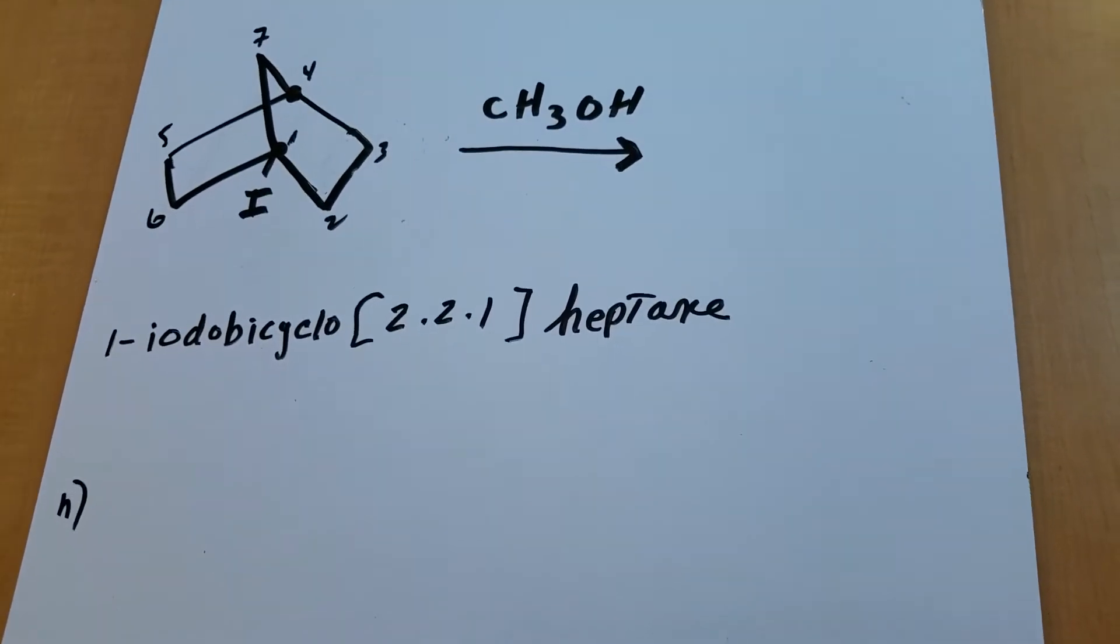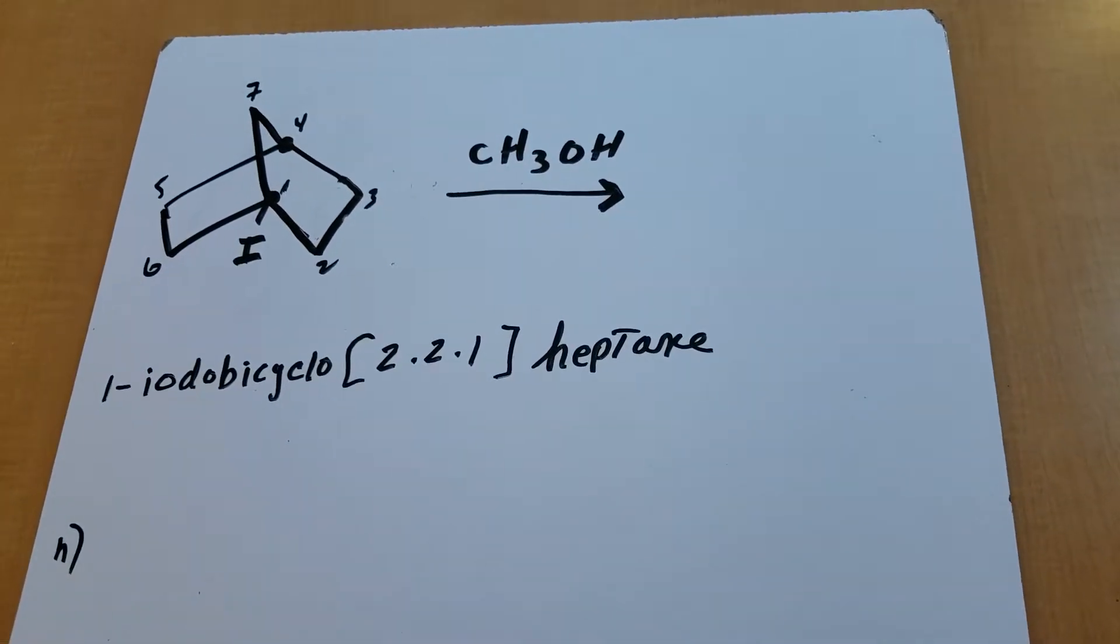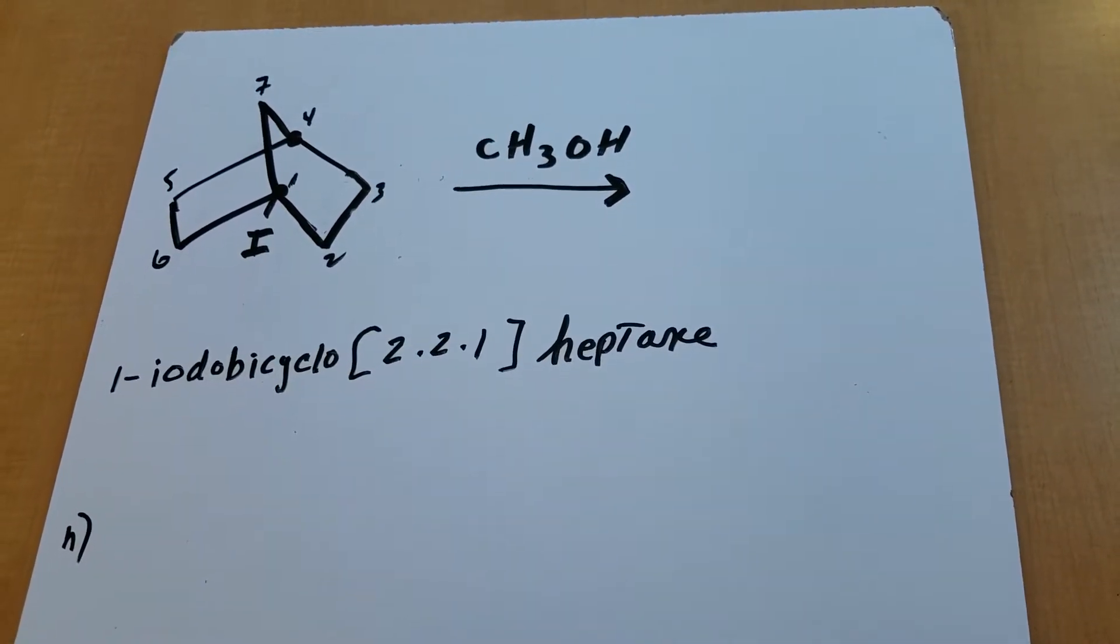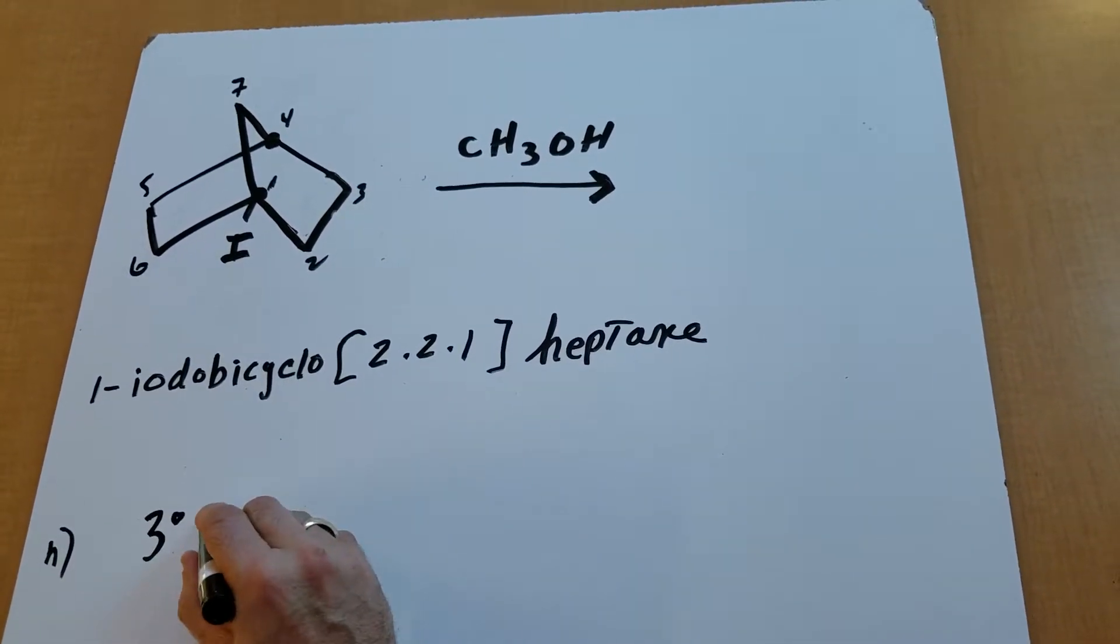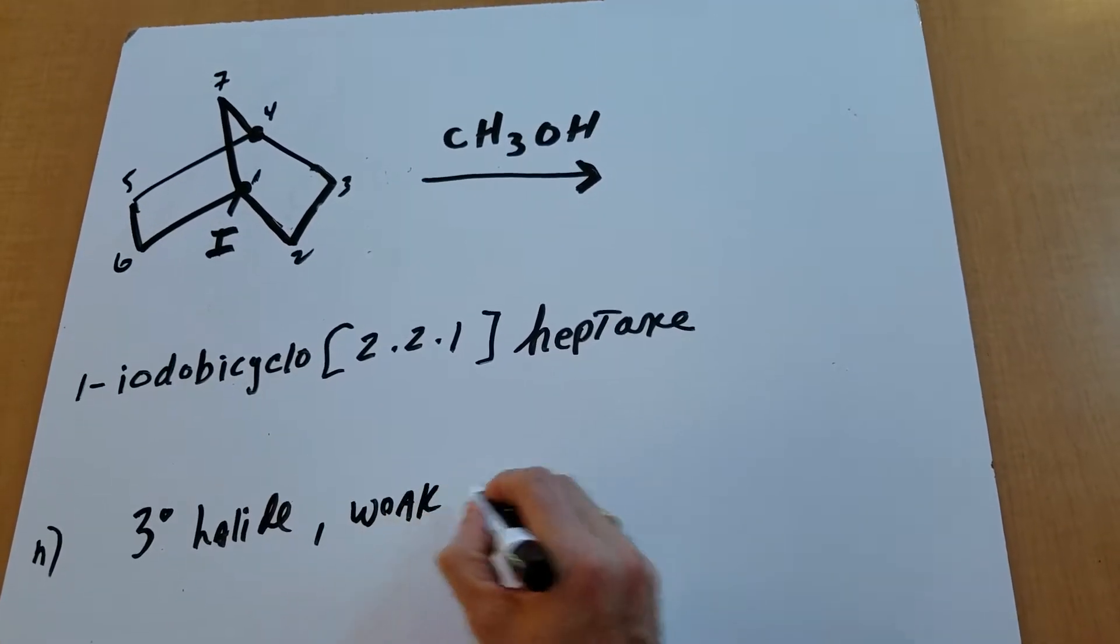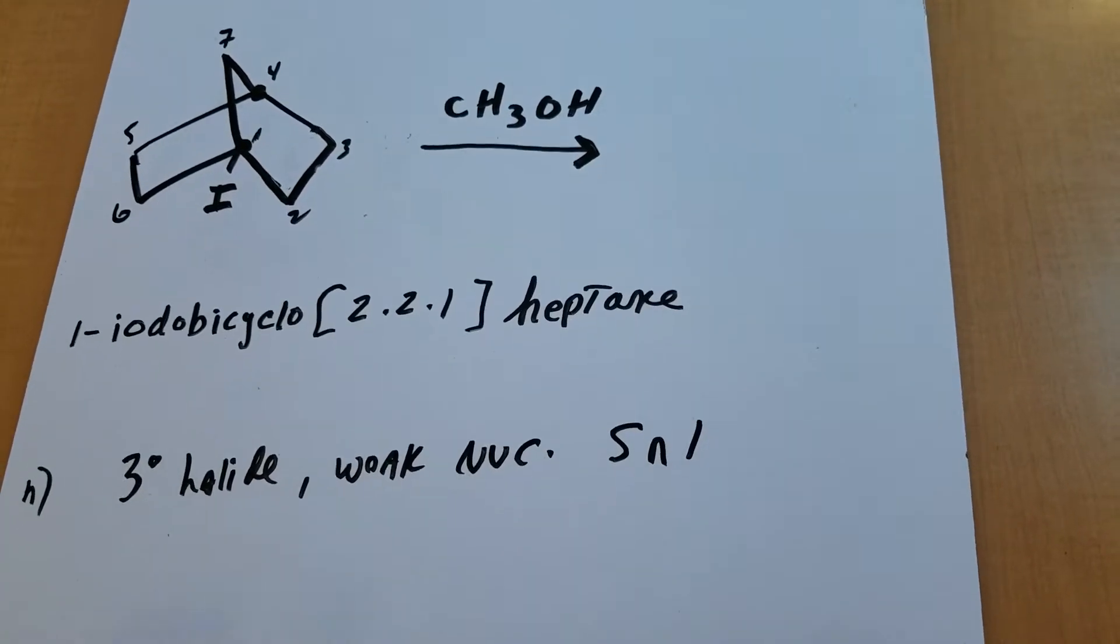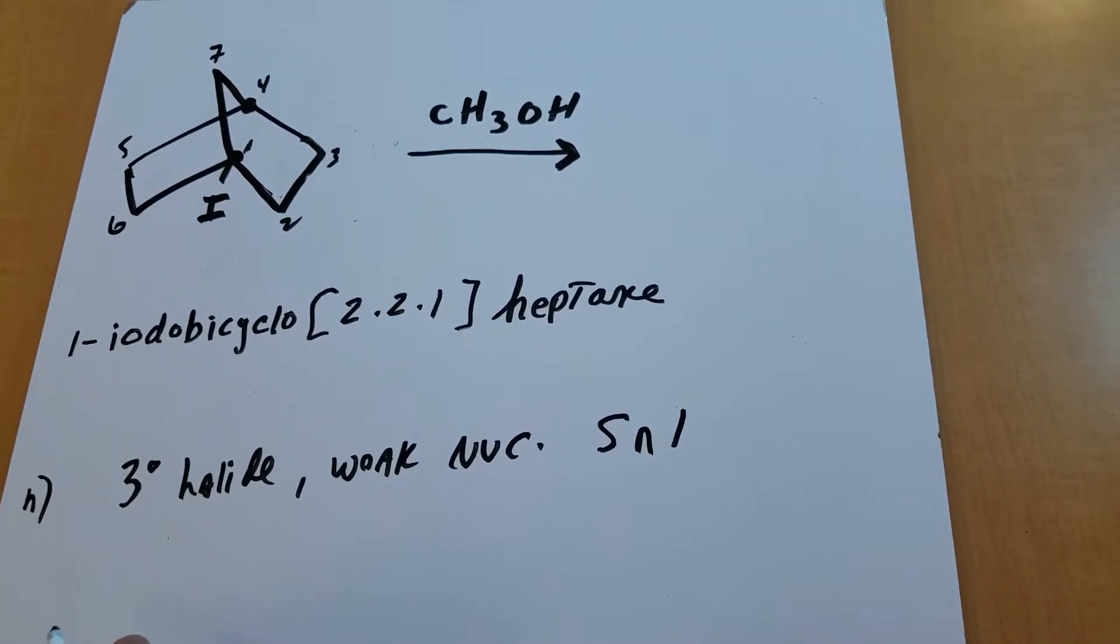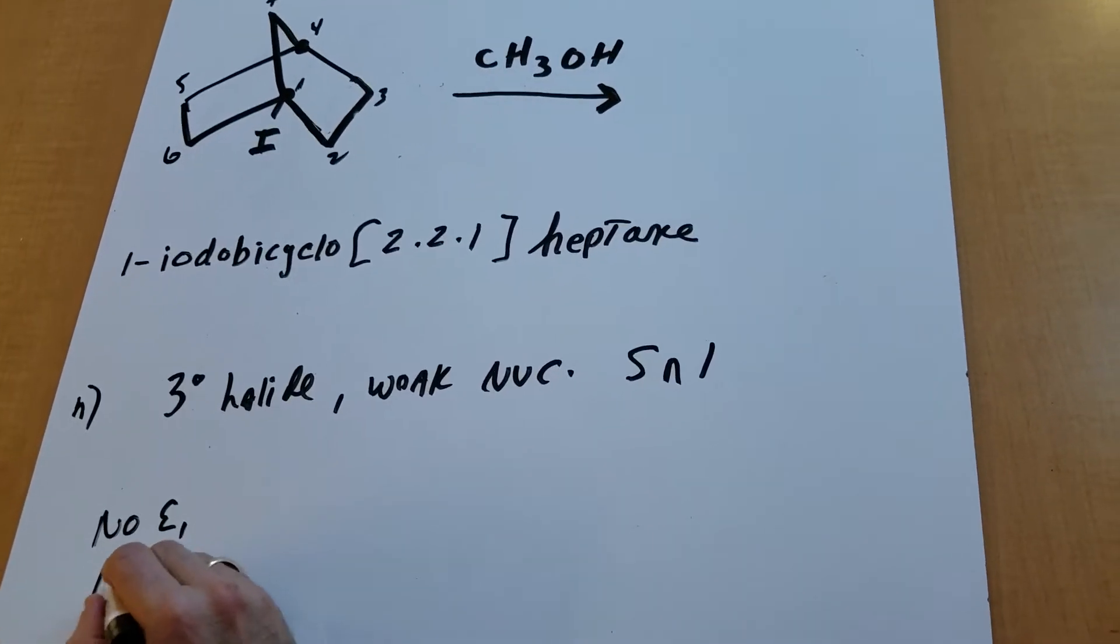Now, in part B of this question, I want to know what mechanism is operating. Well, it's a tertiary halide and it's a weak nucleophile. So usually, if something is a tertiary halide and it's a weak nucleophile, what am I usually thinking of? The answer is, I'm thinking of SN1. But let's hold on.